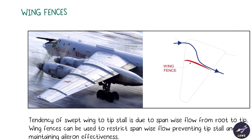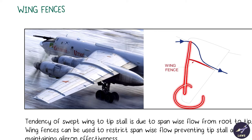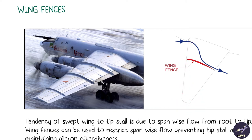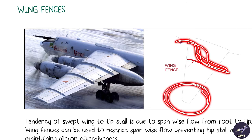Wing fences were used in older aircraft to solve the tip stall issue. They address the spanwise flow problem — preventing flow from stacking up at the tips and reducing aileron effectiveness. Instead, the spanwise flow is redirected, thereby maintaining aileron effectiveness.